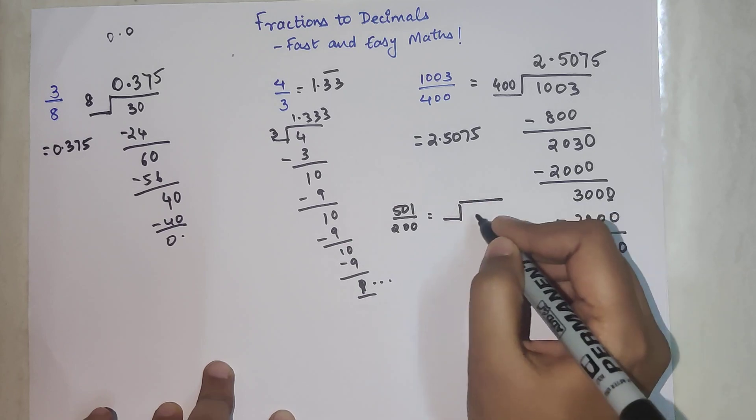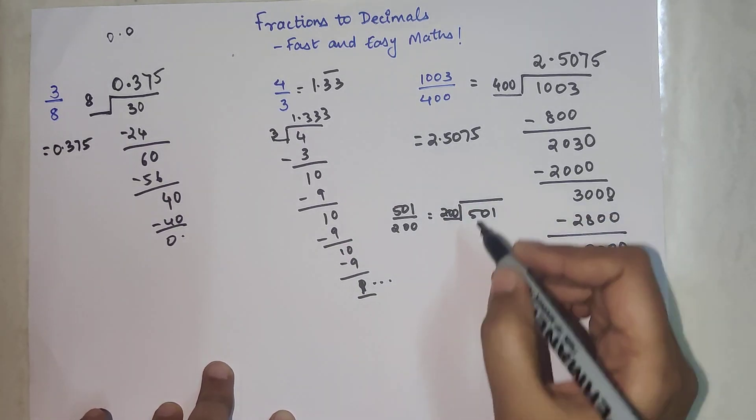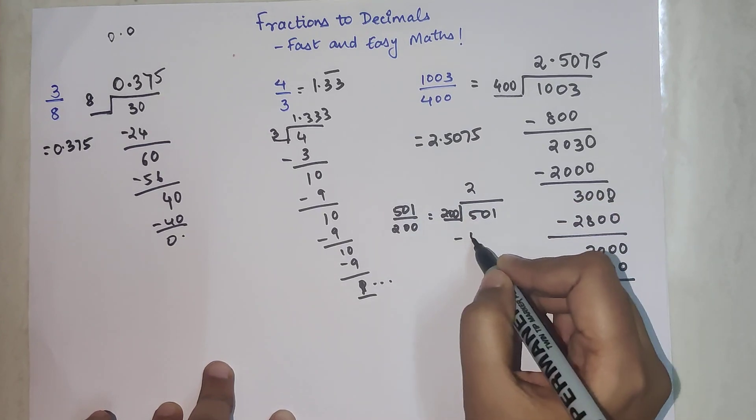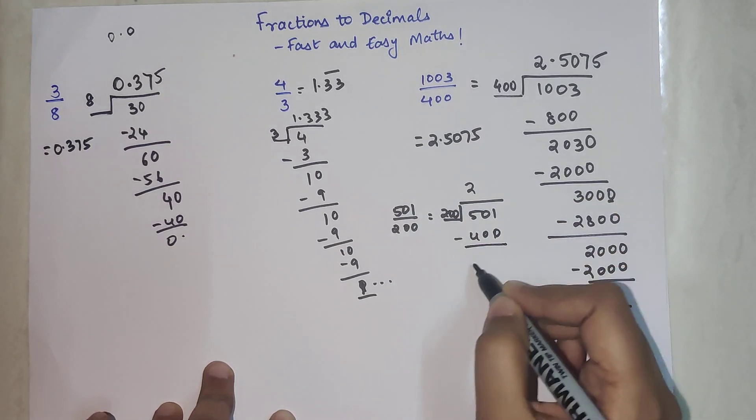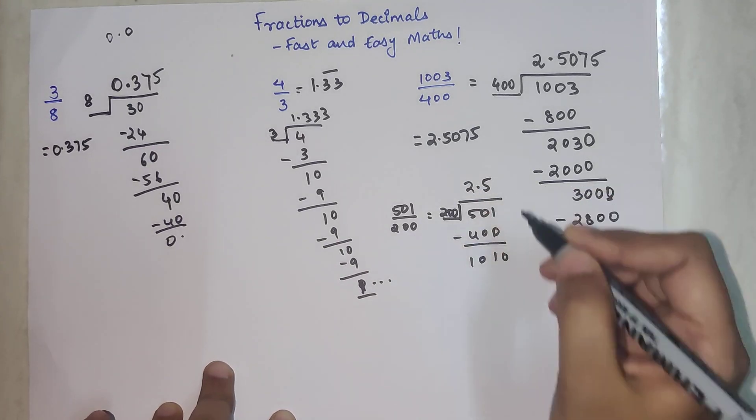So very quickly, let's see what happens when we have to divide 501 by 200. So here we have 501, we have 200. So 200 into 2 gets you 400, we're left with 101.